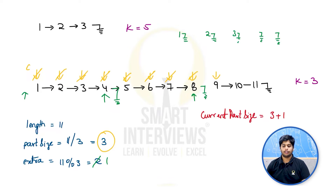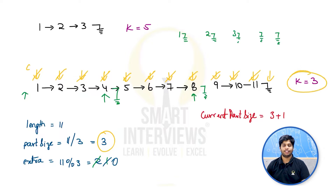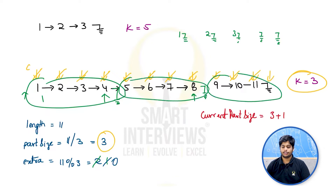Starting the next part: both extra nodes are now used up, so extra nodes is 0. The current part size is just 3. We iterate 3 times, and in the third iteration current points to null. We stop our iterations here because we have gotten all three parts we need. That gives us the first, second, and third parts of the final answer.